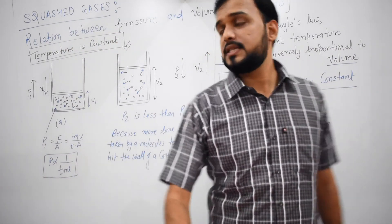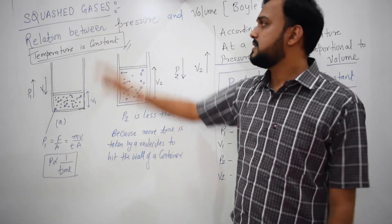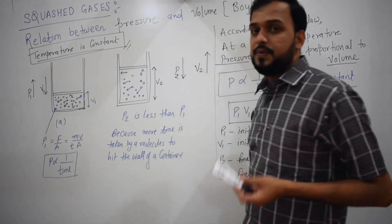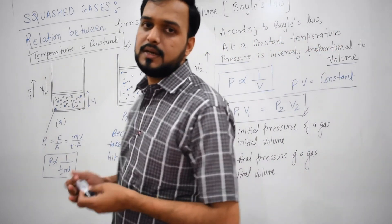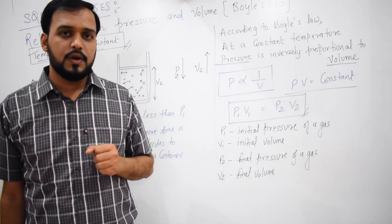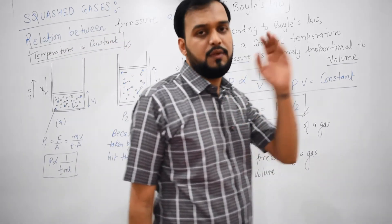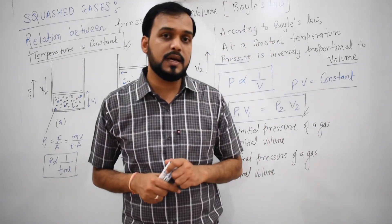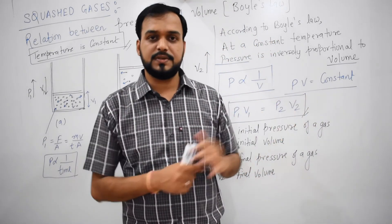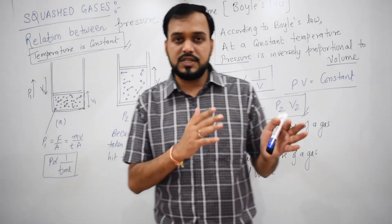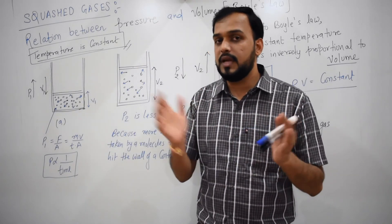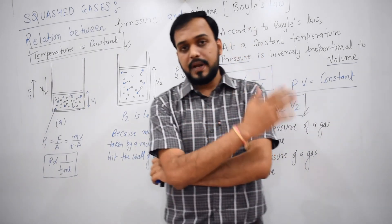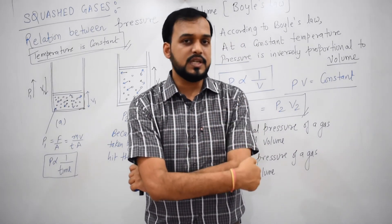Hello students. Next, we will talk about gases. I am going to explain to you the relationship between pressure and volume, which is also known as Boyle's law. According to Boyle's law, the pressure and volume are both inversely proportional to each other, and this is only applicable when the temperature is constant. I am taking one small example to make the pressure-volume relationship more clear — how pressure and volume are inversely proportional to each other.